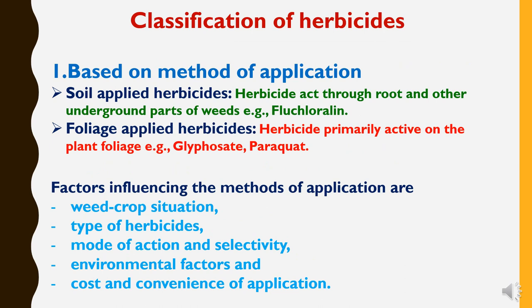Now to study the classification of herbicides. Herbicides are classified on the basis of different parameters. The first classification is based on method of application. On this basis herbicides are divided into two categories. First are soil-applied herbicides, which act through root and other underground parts of weeds — for example, fluchloraline. Second are foliage-applied herbicides, which are primarily active on the plant foliage — examples like glyphosate and paraquat.